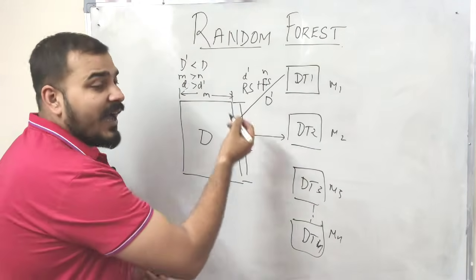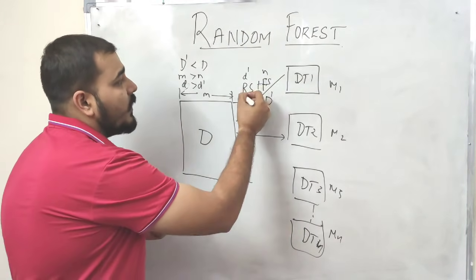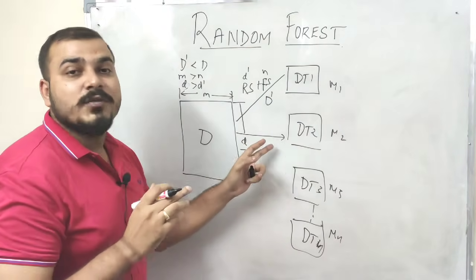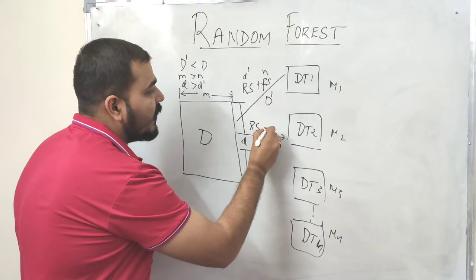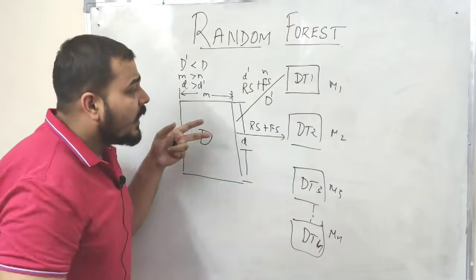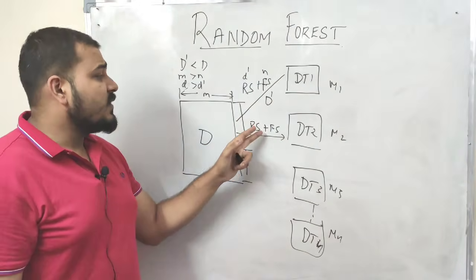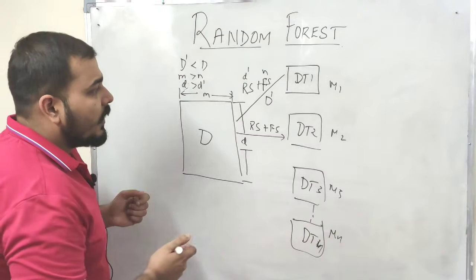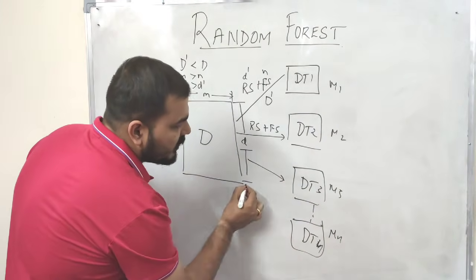Similarly, for decision tree 2, row sampling happens again with replacement. This means some records may repeat, but we are generally taking a different sample of rows and features each time. For example, if decision tree 1 got features 1, 2, 3, 4, 5, decision tree 2 might get features 1, 3, 4, 5, 6, 7. This row and feature sampling happens for every decision tree.